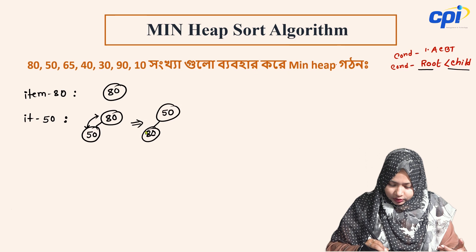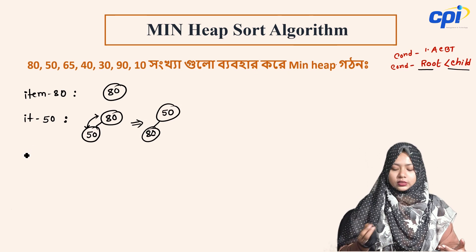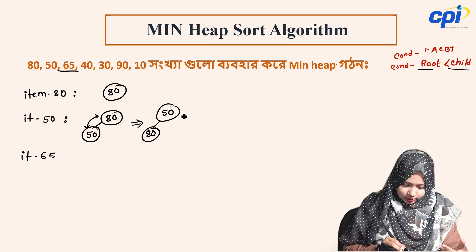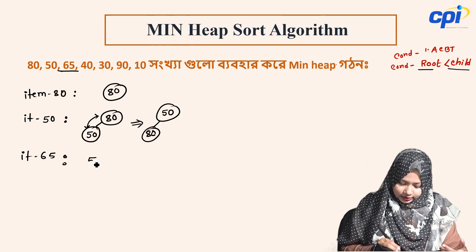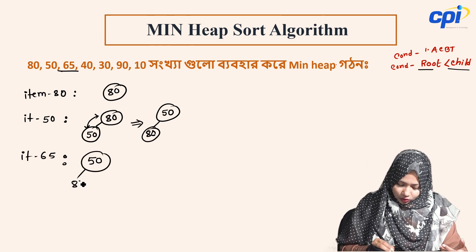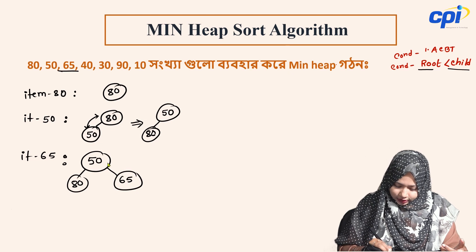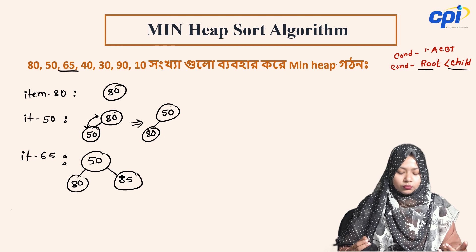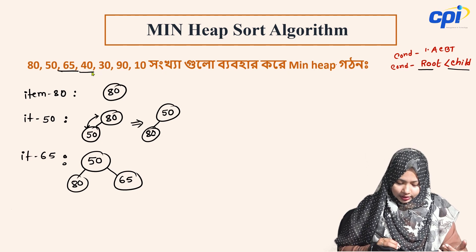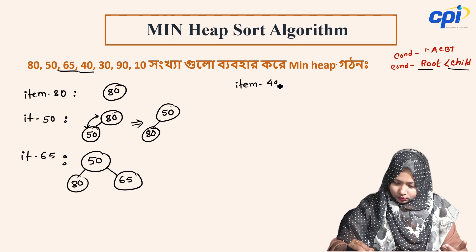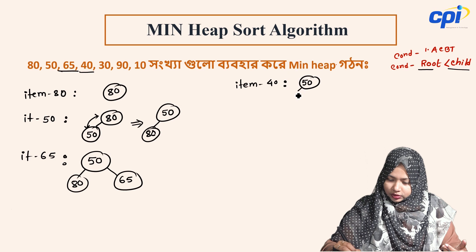After this, we will select the root. We will take item 65 — insert item 65 into the heap.